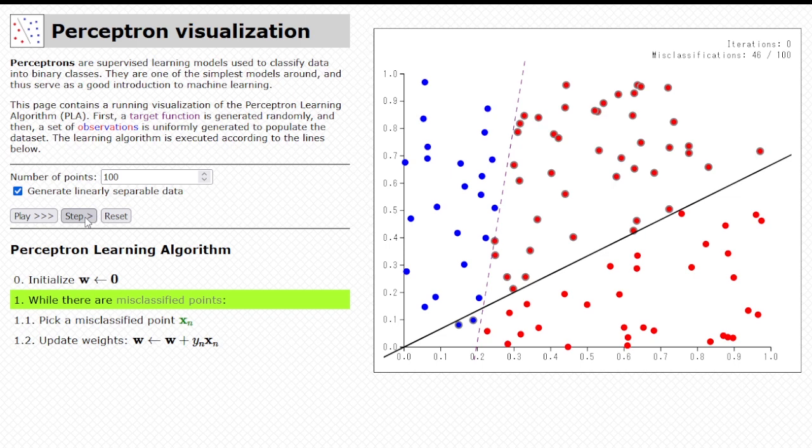So, the first step in the while loop is pick a misclassified point. Now, you can see that one of the gray outline points, one of them that was misclassified, has flashed green.